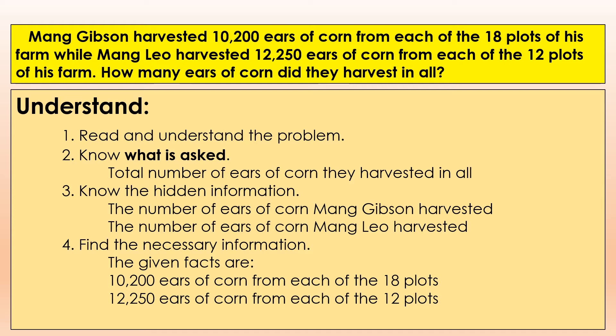Number two, know what is asked: the total number of ears of corn they harvested in all. Three, know the hidden information: the number of ears of corn Mang Gibson harvested, and the number of ears of corn Mang Leo harvested. Number four, find the necessary information. The given facts are 10,200 ears of corn from each of the 18 plots, and 12,250 ears of corn from each of the 12 plots.